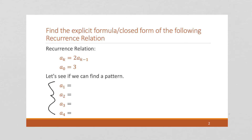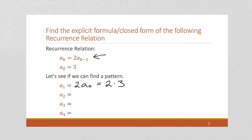Okay, I'm hoping that you've paused the video and given it a try, and now we're going to go over it. So here we have a sub 1. Notice our recurrence relation is that each value is 2 times the previous value. So a sub 1 is going to be 2 times a sub 0, which is 2 times 3. I could work that out and say that's 6, but I don't even need to do that.